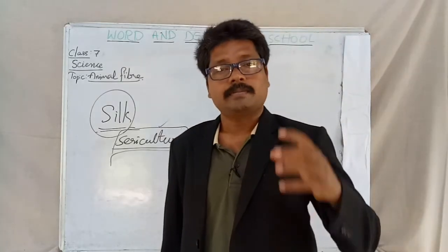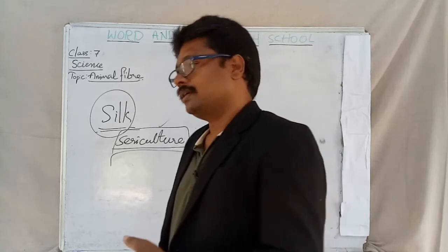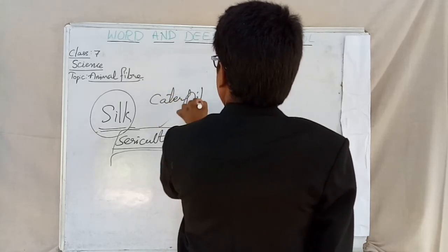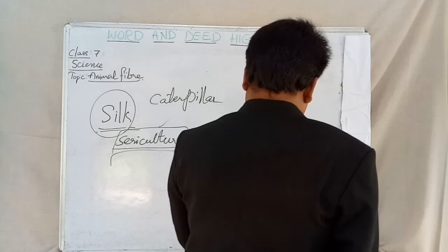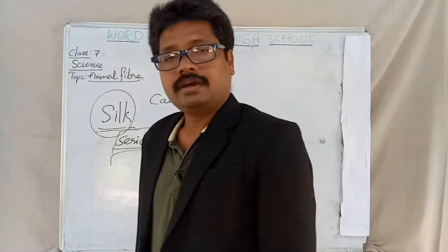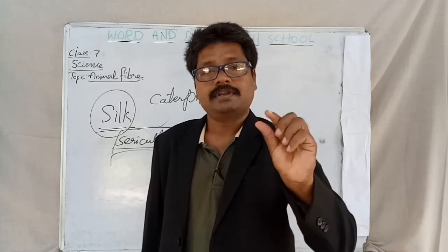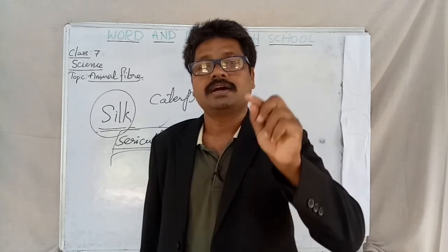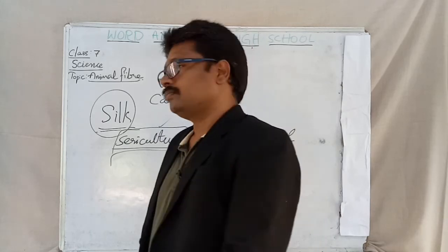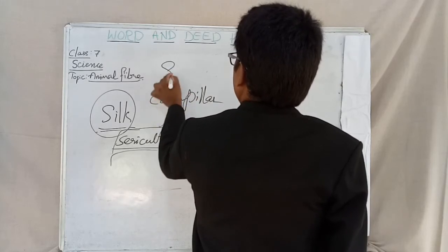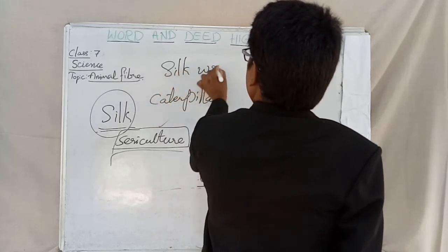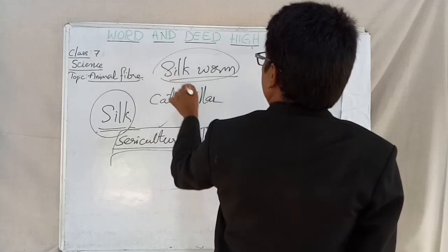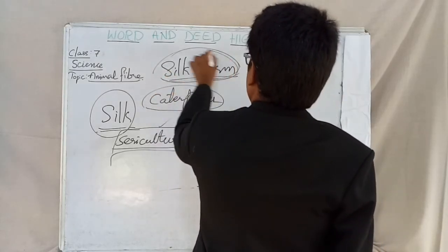We get silk from caterpillars. Caterpillar is one of the stages in the life cycle of a worm. What do we call the worm? Caterpillar is a stage of the silkworm. So if you understand the life cycle of the silkworm, caterpillar is one of the stages of the life cycle of the silkworm.